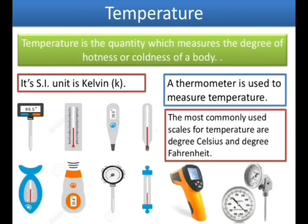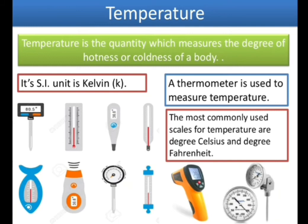Moving to our fourth physical quantity: temperature. Temperature is the quantity which measures the degree of hotness or coldness of a body. Temperature can be measured with the help of a thermometer. The SI unit of temperature is Kelvin, and the symbol for Kelvin is small k. We can also use other units — degree Celsius and degree Fahrenheit — which are used most commonly. We use a clinical thermometer to measure human body temperature. The normal temperature of a human is 37 degree Celsius and 98 degree Fahrenheit.